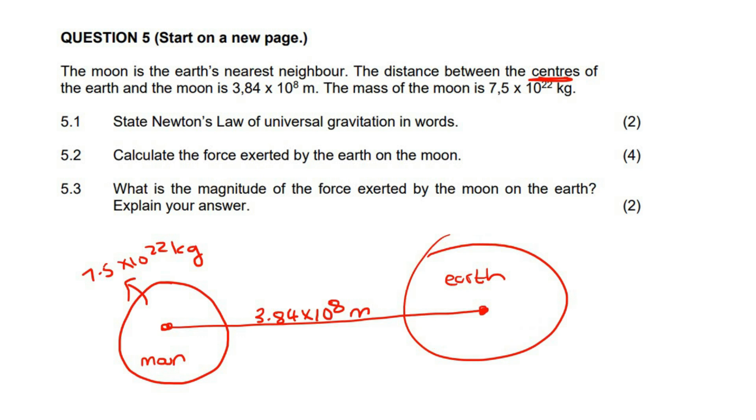The first question says, state Newton's law of universal gravitation in words. So before we give the definition, let's write the formula. That's the formula that goes like this. And so, from the formula, we can get the definition.